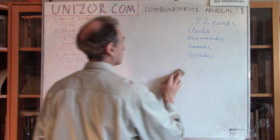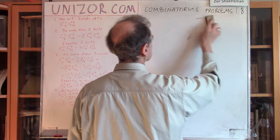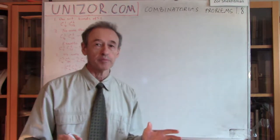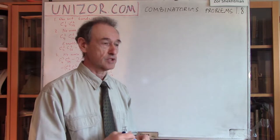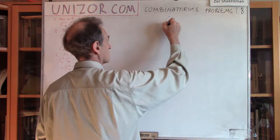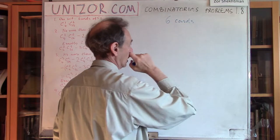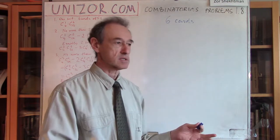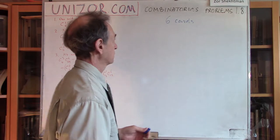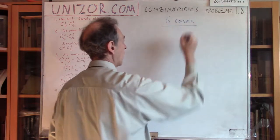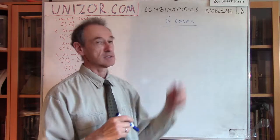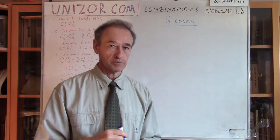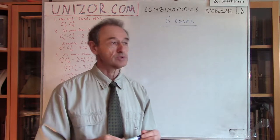Let's talk about the problems. The first problem is very easy. You have to pick up six cards out of the deck of 52 cards, and the requirement is they all should have exactly the same suit — so it's either six clubs, or six hearts, or whatever. The question is: how many different combinations of six cards, all of which belong to the same suit, can you pick?